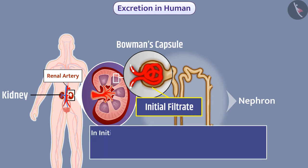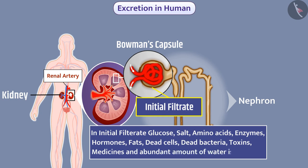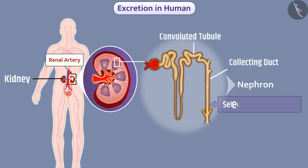In the initial filtrate, glucose, amino acids, enzymes, hormones, fats, dead cells, dead bacteria, toxins, medicines, and an abundant amount of water are present. When the initial filtrate flows through the tubular portion of the nephron, there is selective reabsorption of these materials. The level of absorption depends on the need of water in the body.